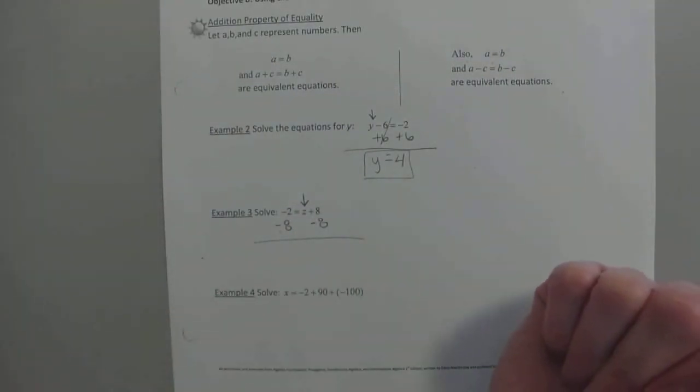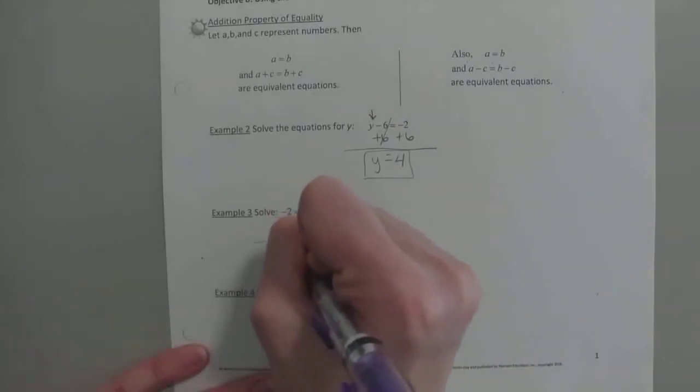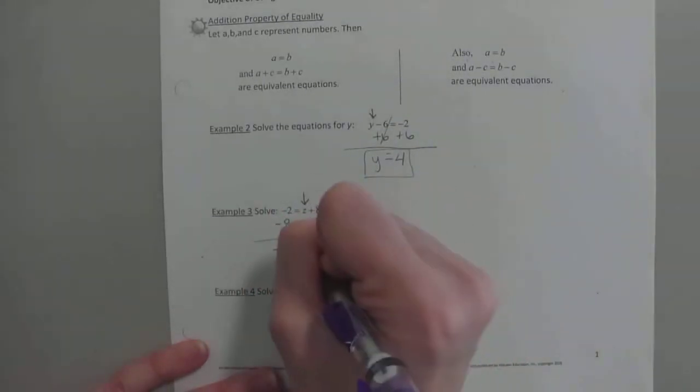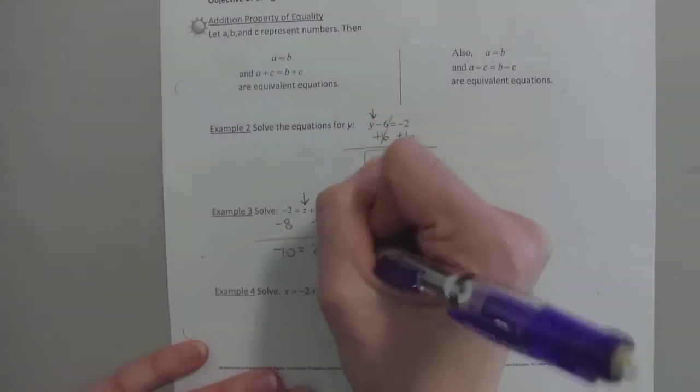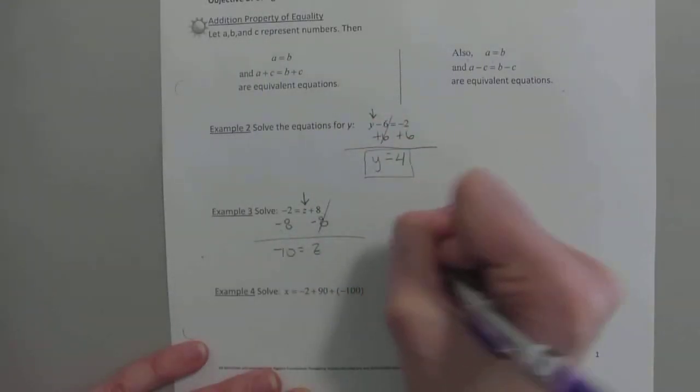On the left, what's negative 2 take away 8? Negative 10. You're sitting at more negatives, right? Equals, we didn't touch z, so z is still there. And then what's 8 minus 8? Nothing.